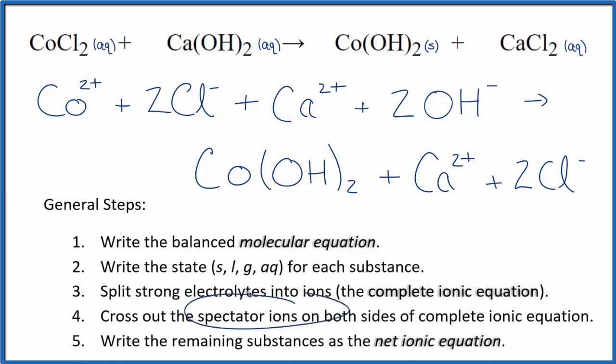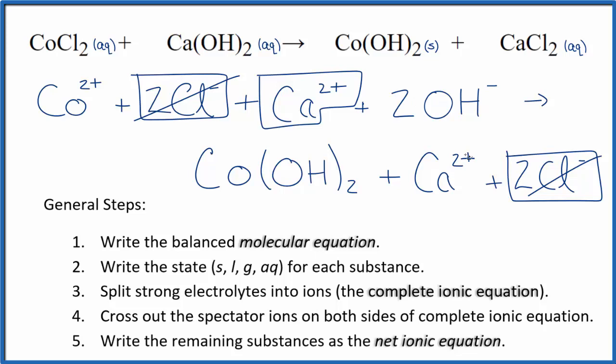Now we can cross out spectator ions. They're on both sides. The reactants on top, I have two chloride ions. On the products, two chloride ions. Cross them out. I have a calcium ion here in the reactants. And in the products, I have the calcium ion. Cross that out.